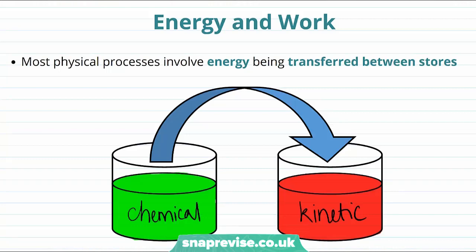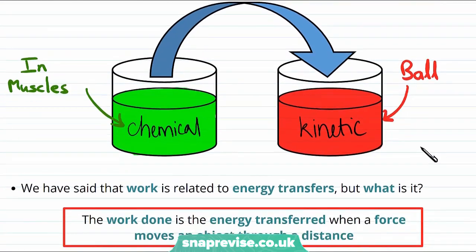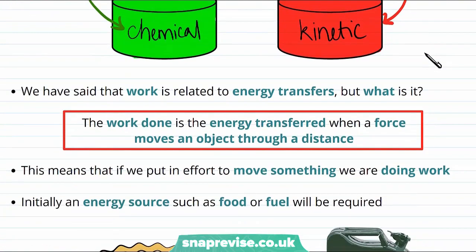So let's start by talking about the relationship between energy and work. We know that most physical processes involve energy being transferred between energy stores. For example, if we throw a ball, we are converting the chemical energy in our muscles into the kinetic energy of the ball. So physical processes involve transfer between energy stores.